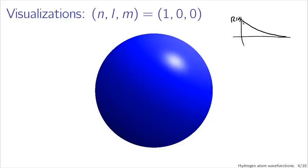So if you have some threshold within which you consider the particle likely to be found — say probabilities higher than some value — you end up with radii less than some critical radius. That's what this sphere is showing you: a sphere with some radius given by whatever threshold you happen to use.